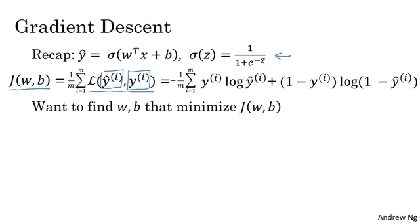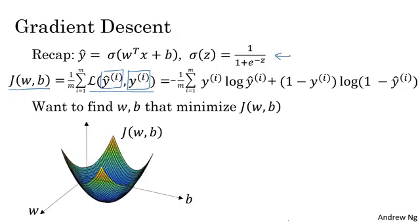So here's an illustration of gradient descent. In this diagram, the horizontal axis represents your space of parameters W and B. In practice, W can be much higher dimensional, but for the purposes of plotting, let's illustrate W as a single real number and B as a single real number. The cost function J of W and B is then some surface above these horizontal axes W and B. The height of the surface represents the value of J at a certain point.